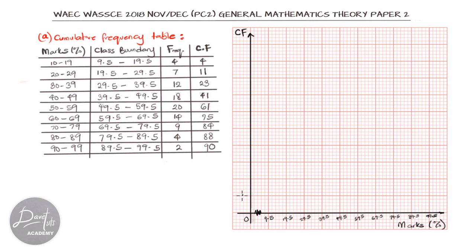Then on the vertical axis, I'm going to use 2 cm to represent 10 units. So I have 10, 20, 30, 40, 50, 60, 70, 80, 90, and 100.